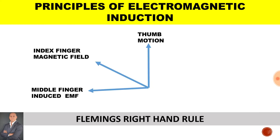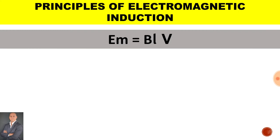Looking at Fleming's right-hand rule, the thumb points in the direction of motion, the index finger in the direction of the magnetic field, and the middle finger in the direction of the induced EMF.